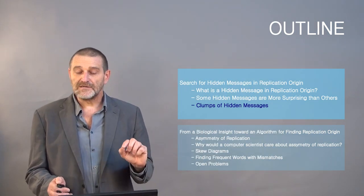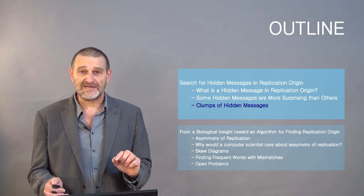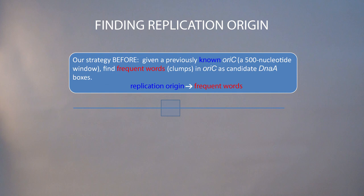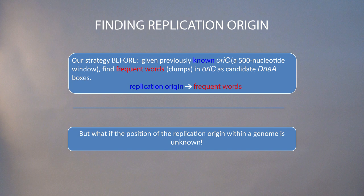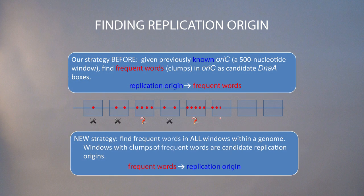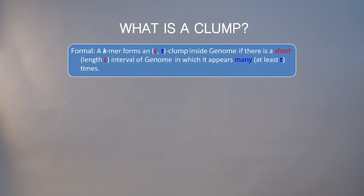Let's resort to the idea that I call clumps or clusters of hidden messages to solve this problem. What we were doing before: we assumed that the replication origin region, maybe 500 nucleotides long, is known, and in this region we were finding frequent words — for example, in this window we found four frequent words appearing four times, giving a hint that maybe it is a DnaA box. But if we don't know the replication origin, maybe we should look at all possible windows in the genome. If in a particular window we find frequent words appearing many times, it's a hint that maybe we found a replication origin. Let's define the window length as L and the minimum occurrence count as T — that defines the notion of an L-T clump: a k-mer that appears in a window of length L at least T times.